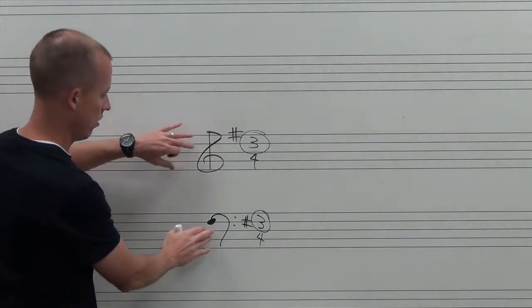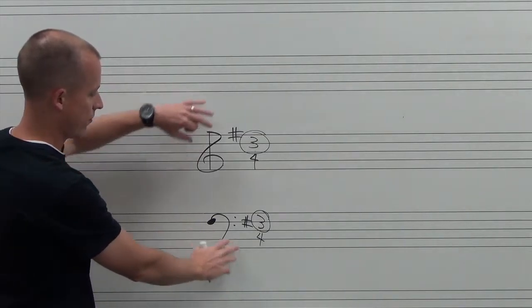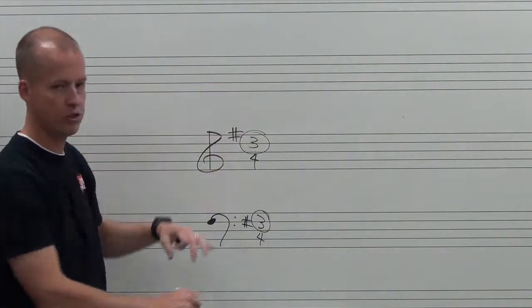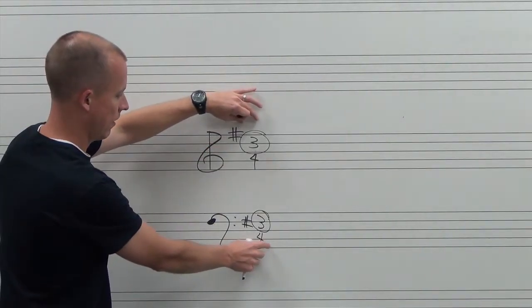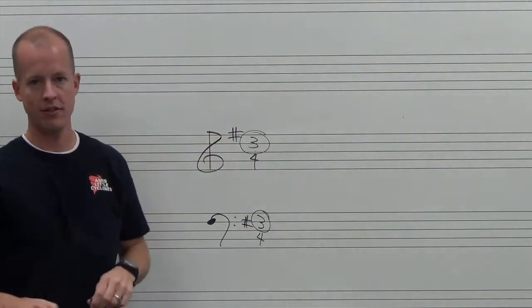So from these three things we learn what note is where on the staff. We know if anything is going to be sharp or flat from our key signature. And we know how many beats per measure from our time signature.